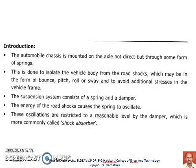What is a suspension system? When you observe an automobile, the automobile chassis is mounted on axles, not directly, but through some form of springs. This is done to isolate the vehicle body from the road shocks, which may be in the form of bouncing, pitching, rolling or swaying, and to avoid additional stresses in the vehicle frame. Basically, the suspension system consists of a spring and a damper. The energy of the road shocks causes the spring to oscillate, and these oscillations are restricted to a reasonable level by the damper, which is more commonly called a shock absorber.